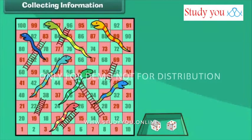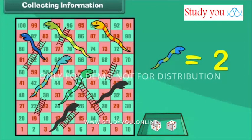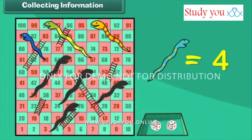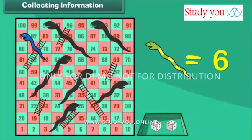Have you played this game before? It's the snake and ladder game. We will count the number of snakes and ladders seen on this board. First, let us count and write the total number of snakes: 1, 2, 3, 4, 5, 6 and 7. There are 7 snakes.